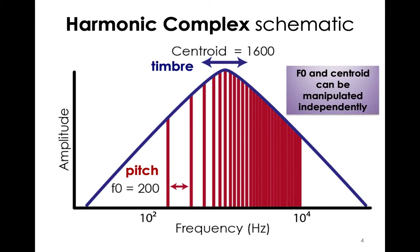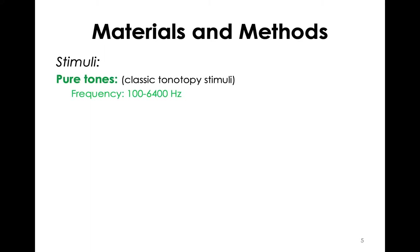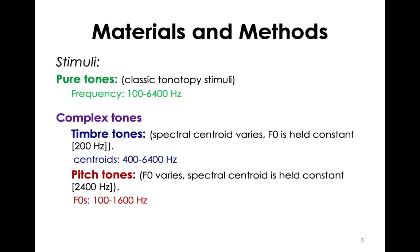The key aspect is that these attributes can be manipulated independently of one another. We used both pure tones and complex tones for our stimuli. Pure tones served as our baseline of what tonotopy traditionally looks like. The complex tones consisted of timbre tones, varying in spectral centroid while fundamental frequency was held constant, and pitch tones, in which the fundamental frequency was varying and the spectral centroid was held constant. In all cases, there's a half-octave spacing between the tones.